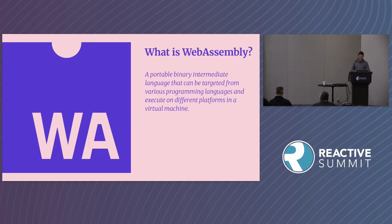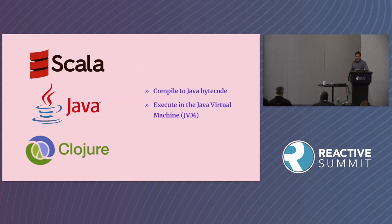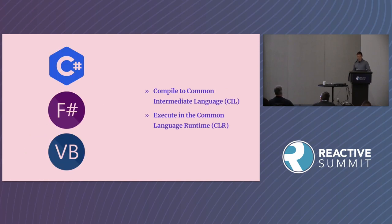So first, what's WebAssembly? It's a portable, binary, intermediate language that can be targeted from various programming languages and execute on different platforms through a virtual machine. Many languages can compile to WebAssembly: C, C++, C#, Rust, Python, Swift, Go. The idea itself isn't unfamiliar — Scala, Java, and Clojure all compile to Java bytecode and run in the JVM, and all .NET languages compile to the common intermediate language and run on the common language runtime. This is something we've been working with for a while.